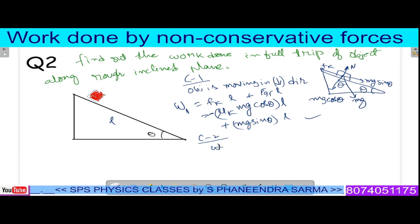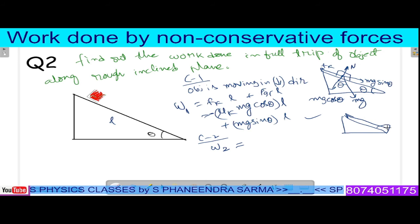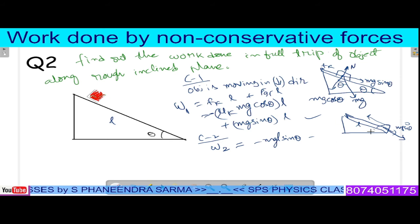Similarly in case 2, work done W2 is given by: the object is at the bottom condition, now moving vertically upward. What is happening? Mg sin theta in backward direction, displacement L in forward direction. Therefore we can write minus mg L sin theta because of gravitation. However, kinetic friction acts because the object is moving in this direction, so kinetic friction also acts in this direction, displacement in opposite direction. That means mu k mg cos theta times L, and the symbol here is minus, because they are 180 degrees apart.